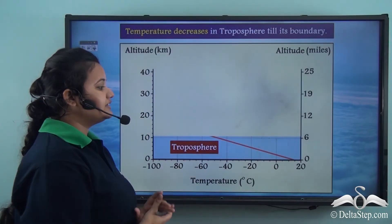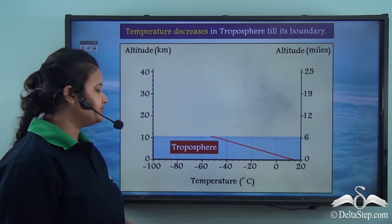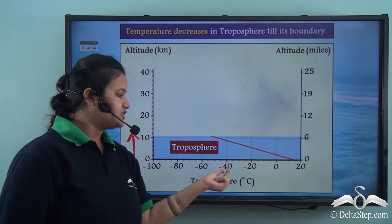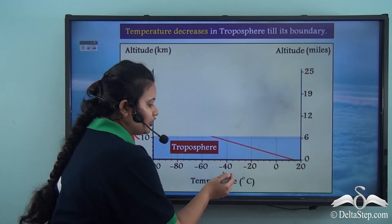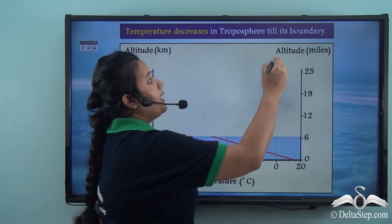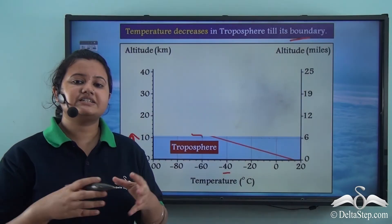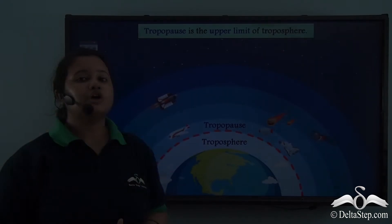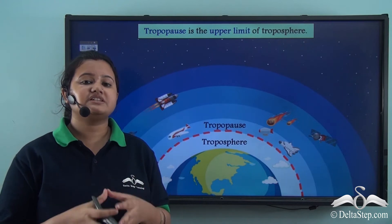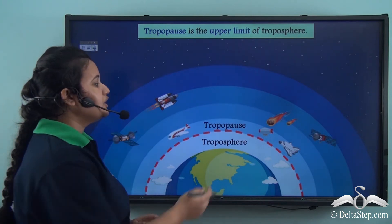A graph showing the decrease in temperature in the troposphere confirms that as altitude increases, temperature keeps on decreasing — from around 20°C down to more than minus 40 degrees Celsius at the boundary of the troposphere. At this boundary, the decrease in temperature stops. This boundary of the troposphere is known as the tropopause.